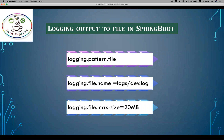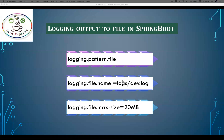Now you already know how to display the console. Here you can see logging dot pattern dot file. When you use dot file, you need to give the related information: which pattern you want to display, the file name, which folder, which log — dev dot log, production dot log, test dot log. You can also set the file size; the default is 10 MB but you can change the maximum size.